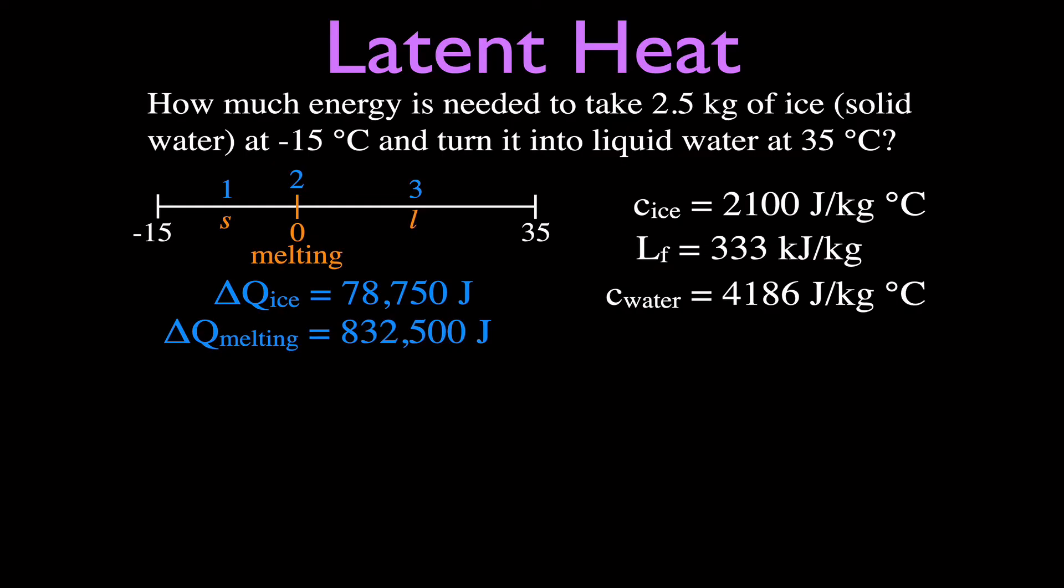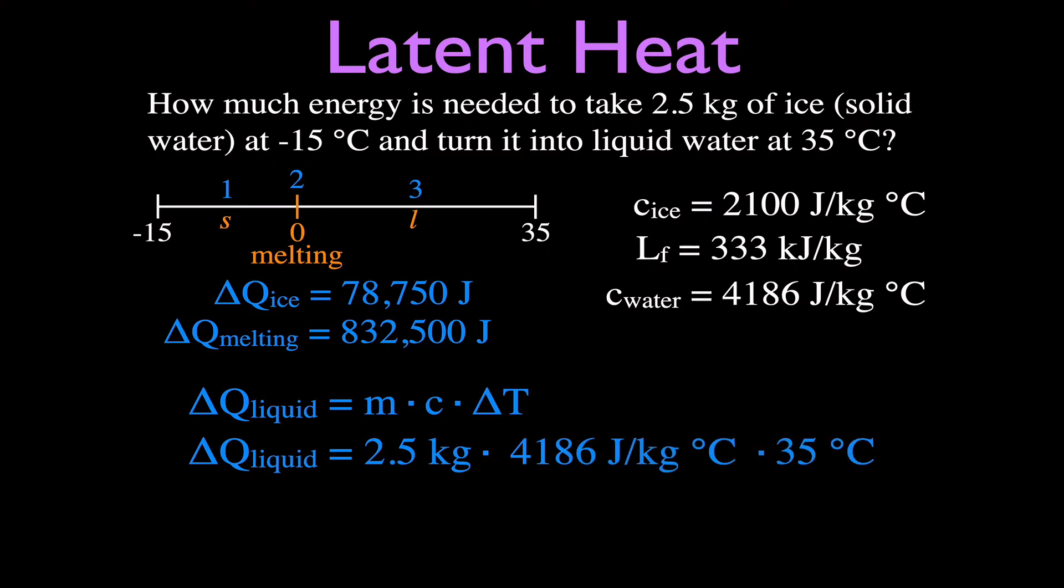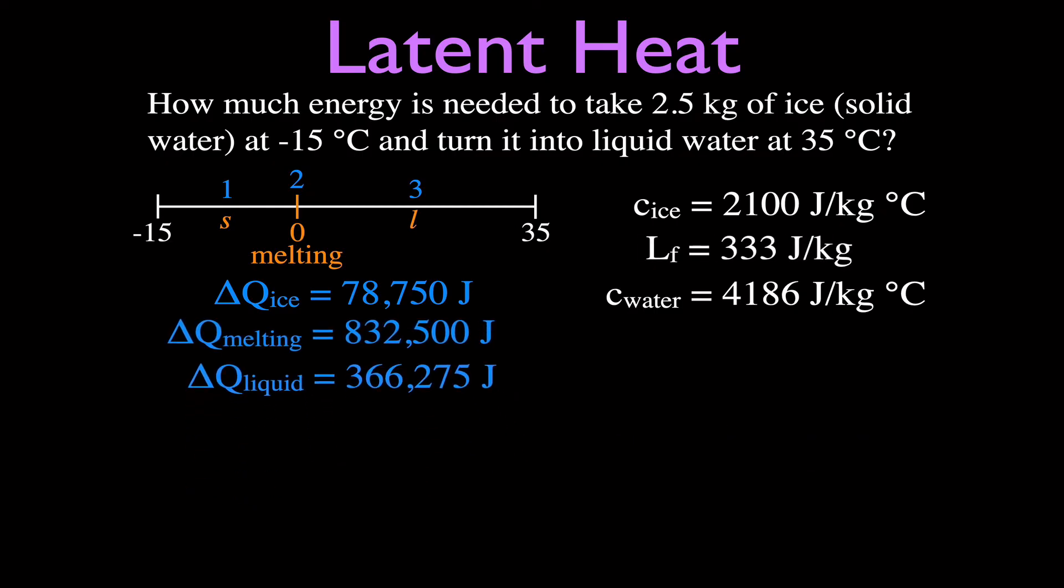The third value is when we take that liquid from zero and raise it up to 35 degrees Celsius. Now this is the same equation we had for the solid. This is MC delta T. Now we have the mass. It's the same mass. But now we have to use the specific heat of the water and not the specific heat of the ice. The specific heat of water is 4,186 joules per kilogram per degree Celsius. And this time we have a change in temperature of 35 degrees Celsius. We're just going to multiply those three values. And we get that that is 366,275 joules.